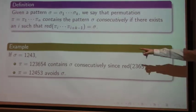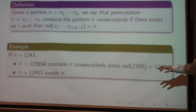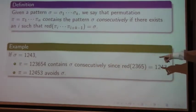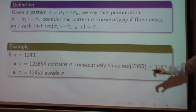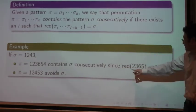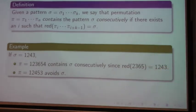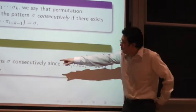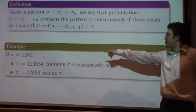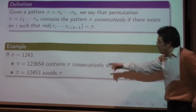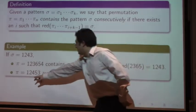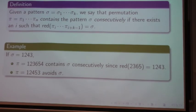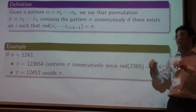So, just as an example, if my pattern is 1, 2, 4, 3, then the permutation 1, 2, 3, 6, 5, 4, it contains my pattern consecutively, because the middle four terms are 1, 2, 4, 3. On the other hand, 1, 2, 4, 5, 3 avoids this pattern consecutively. So, note that, in a classical sense, it contains 1, 2, 4, 3. But, in terms of classical pattern occurrences, this permutation avoids this pattern consecutively.